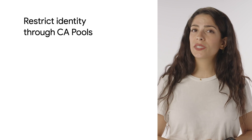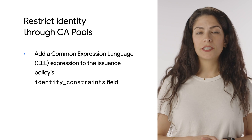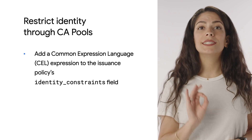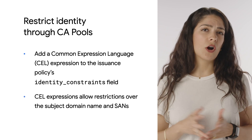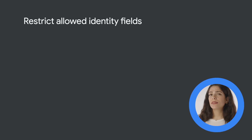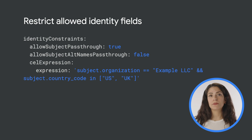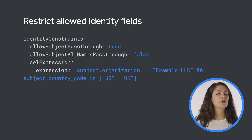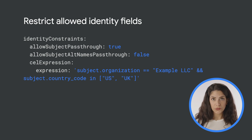For example two, we'll look at restricting allowed identity fields. If you need to restrict the identity of certificates issued through a CA pool, you can add a Common Expression Language, or CEL, expression to the issuance policy's identity constraints field. The CEL expressions allow arbitrary restrictions over the subject distinguished name, including the common name, and the SANs of a certificate. This code shows how to allow the CA to issue only certificates matching a specified subject — in this case requiring the organization to be Example LLC and the country code being either the US or UK. This means certificates will only be issued identifying this specific company in one of these two countries. Note that the actual value of the CEL expression is in the nested expression field. To learn more about all the supported restrictions for issuance policies, check out the link in the description.